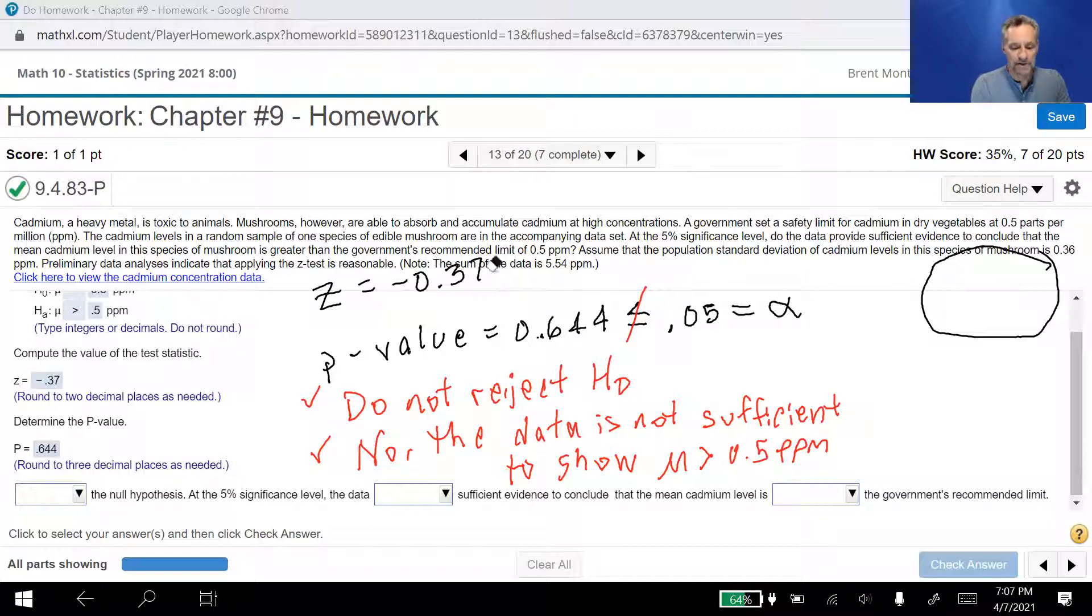Now, do bear in mind, this is a comma right here. It looks almost like an R, but that was no comma. The data is not sufficient to show mu is greater than 0.5 parts per million. And so that's what we state here. Do not reject the null hypothesis. At the 5% significance level, the data do not provide sufficient evidence to conclude that the mean cadmium level is more than the government's recommended limit.